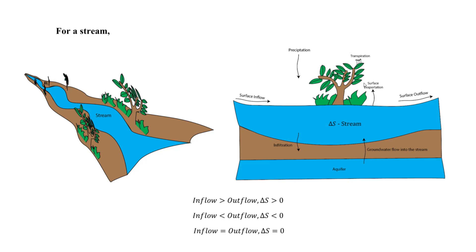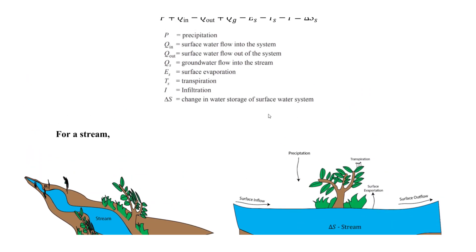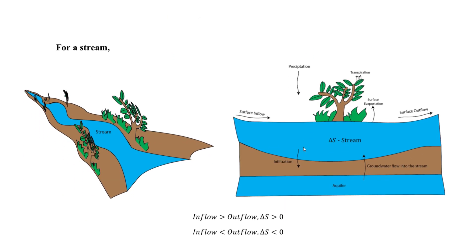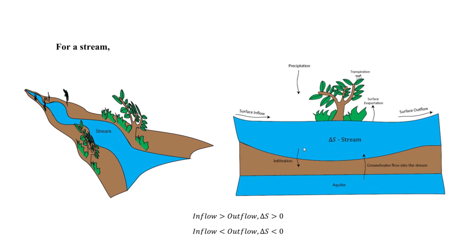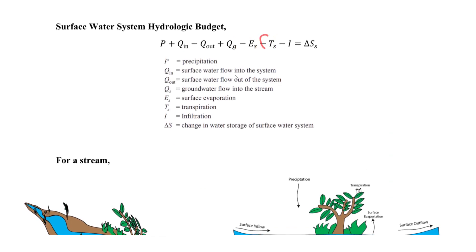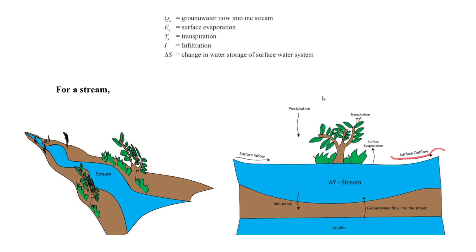Transpiration looks specifically at plants or vegetation — water vapor escapes from the pores under the leaves. Soil moisture travels through the root system, up to the leaves, and water vapor escapes as transpiration. Infiltration is also negative — water leaves the stream through infiltration into the ground. Q_out, the surface outflow, is the last negative term. So there are four outflow components.